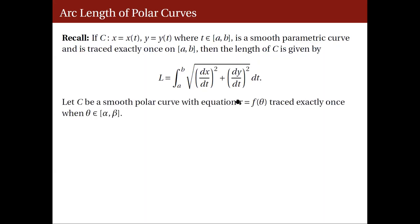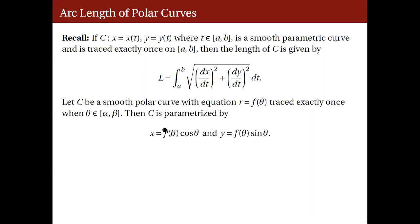Now consider a smooth polar curve C with equation r equals f of theta, and suppose that this polar curve is traced exactly once from theta equals alpha to theta equals beta. This polar curve C is parametrized by x equals r cosine theta and y equals r sine theta. Since r is a function of theta, we can replace r with f of theta, and so x and y are now functions of the parameter theta.